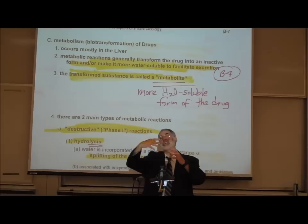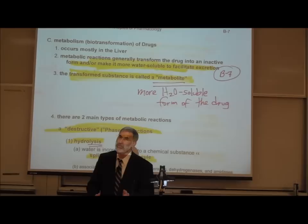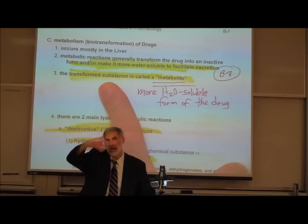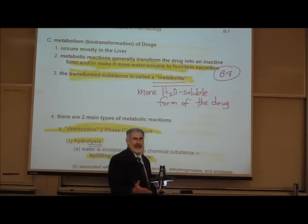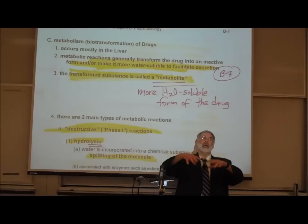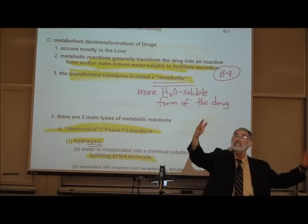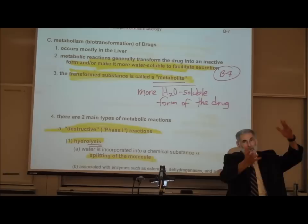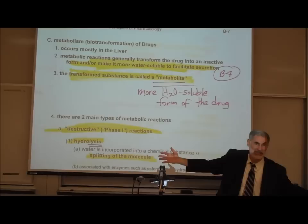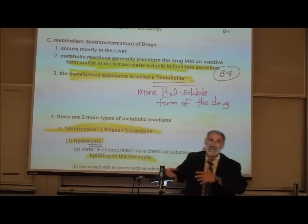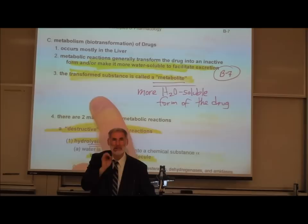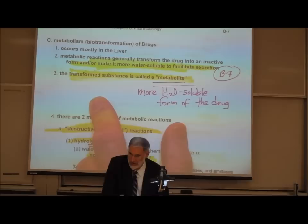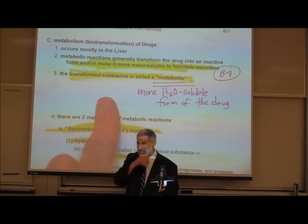What the liver does is it changes the drug into some other form. In changing the form of the drug, it usually changes the drug into a more water-soluble form. By making the drug more water-soluble, it means it's less able to move across cell membranes. It will be less able to move out of the bloodstream or into the bloodstream, losing its ability to move wherever it wants because less fat-soluble means it can't just move across those cell membranes. So the main goal of the liver is to make that drug less fat-soluble, more water-soluble, so it cannot freely move wherever it wants.